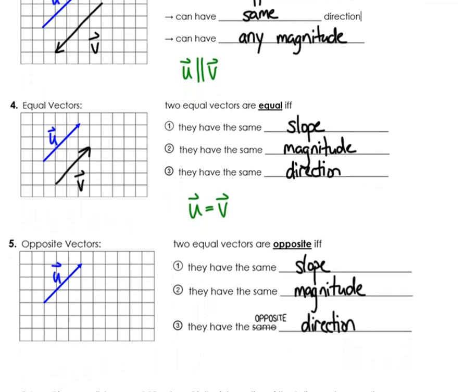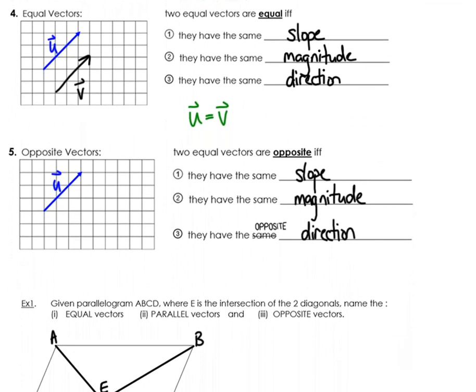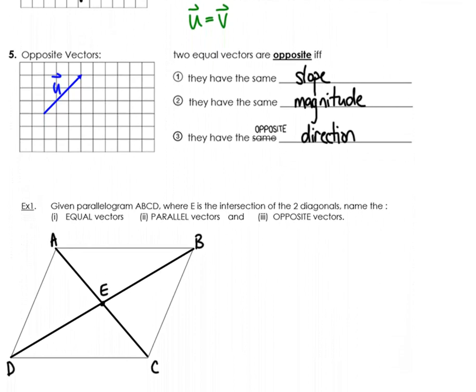Opposite vectors are pretty much like equal vectors. The only difference is that they're going in the opposite direction. So v and u look like they're the same magnitude. They have the same slope so they are parallel but one's going in the opposite direction of the other. We write that opposite direction with a negative.